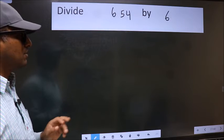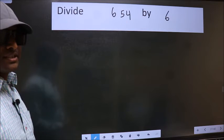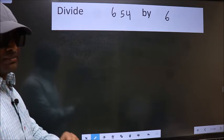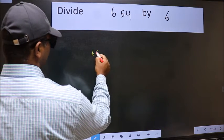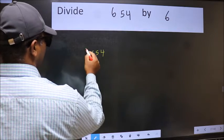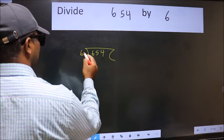Divide 654 by 6. To do this division, we should frame it in this way. 654 here and 6 here.